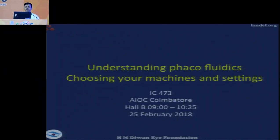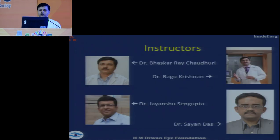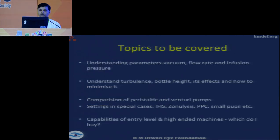We will be dealing with a fairly important topic that we encounter in our day-to-day practice: understanding phacofluidics and, most importantly, choosing your machines and settings. The topics we will cover include understanding the phaco parameters and jargon, turbulence, bottle height and its effects, comparison of peristaltic and venturi pumps, settings in special cases like IFIS, zonulysis, PPC, small pupil, and capabilities of entry-level versus high-end machines. We will not be talking about any brands.